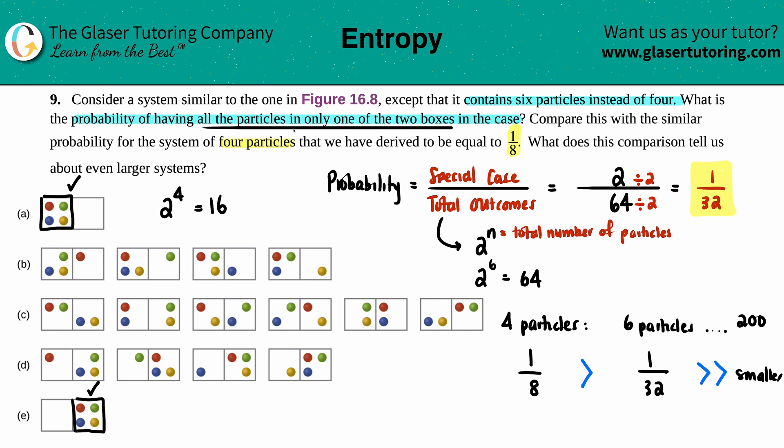So to sum it up, the higher the number of particles, the less probability of whatever your special case is. So the higher the particles—and that's for the larger systems—your probability will decrease because there's just so many different outcomes, mainly because you have so many different particles.